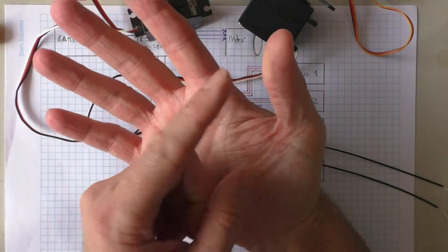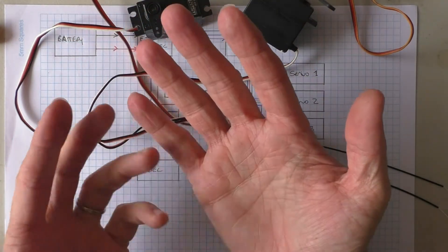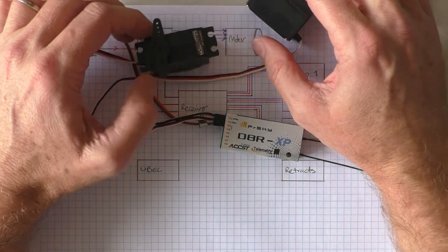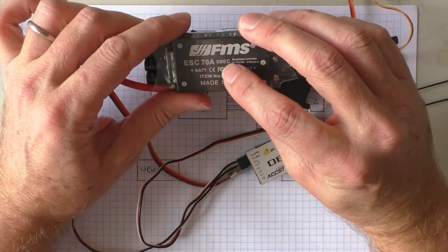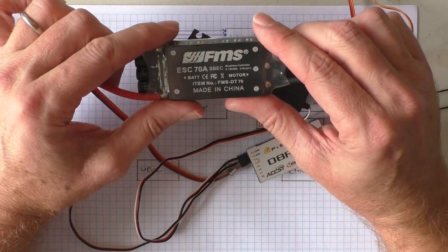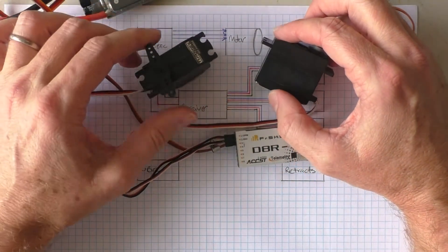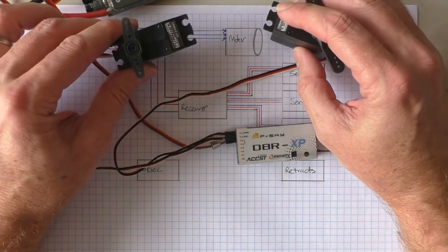So if you have your elevator, aileron, rudder, flaps, and retracts, you can have 7 servos, all at an amp each. So that's 7 amps. So as you can see, the built-in SBEC may not have enough power to power all your servos at the same time.